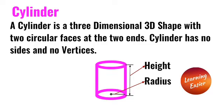A cylinder is a three-dimensional shape with two circular faces at the two ends. A cylinder has no sides and no vertices.